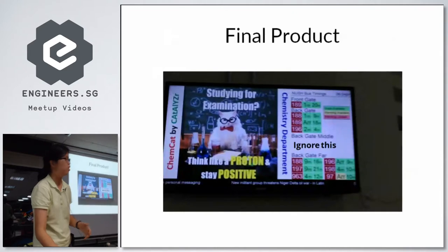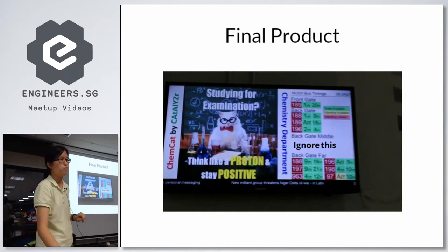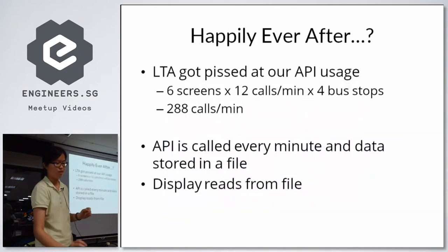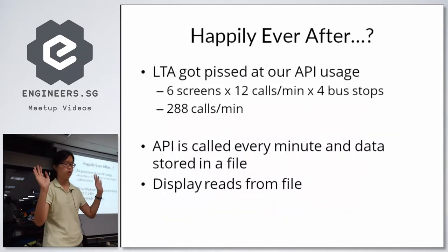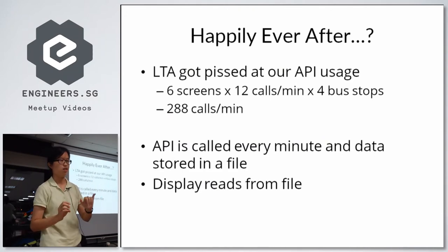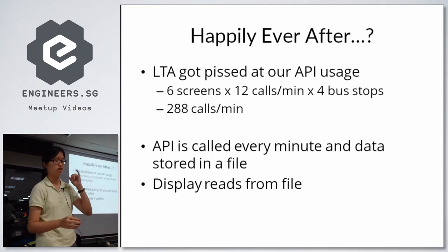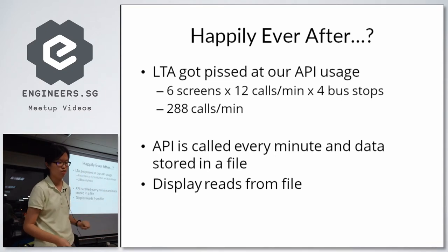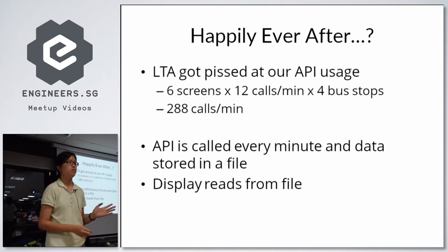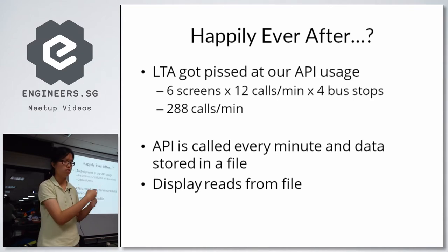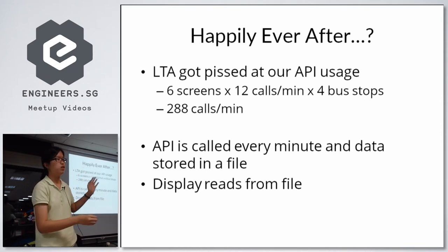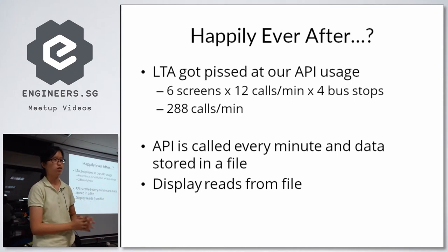This was how it looked in the end. For some reason one bus stop disappeared, but generally people were okay with it for a while. We put it out and it was fine for a few months. Then we had six screens refreshing every five seconds, four bus stops, and LTA called us and told us to knock it down because we had a few hundred API calls per minute. Thereafter, my friend decided to call the API once every minute — which is how often the data is updated — write the data to a file, and then each time the screens update, they read from the file instead of making a new API call.